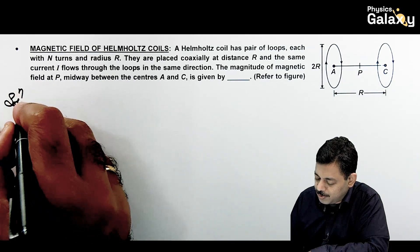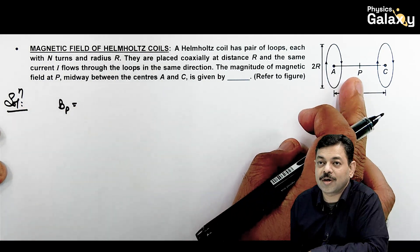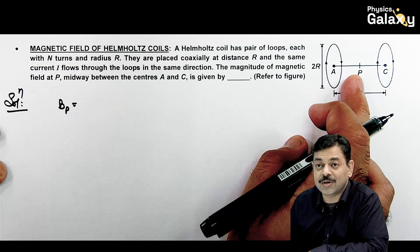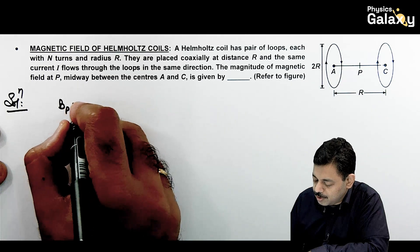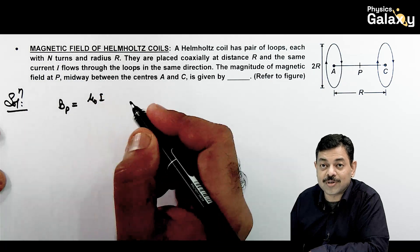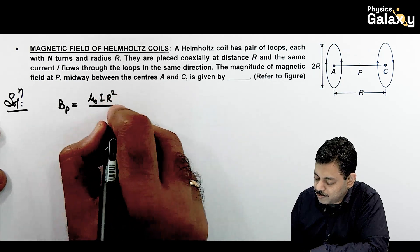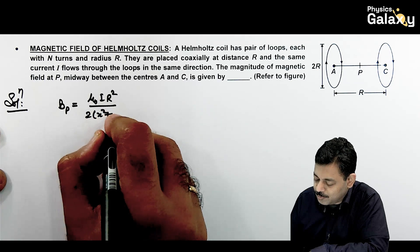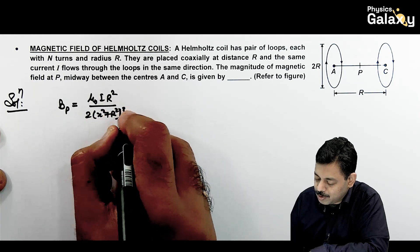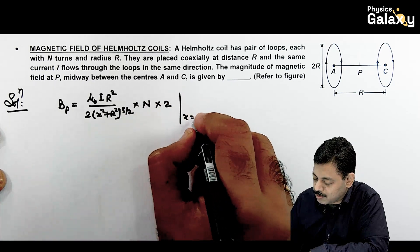If we calculate, magnetic field at P - you can calculate for any one coil and double it because both produce field in same direction. Magnetic field is mu naught i r squared divided by 2 times (x squared plus r squared) to power 3/2, multiplied by number of turns. Then we multiply by 2 and put x equals to r by 2. Distance x equals r by 2, that's where we want to calculate.